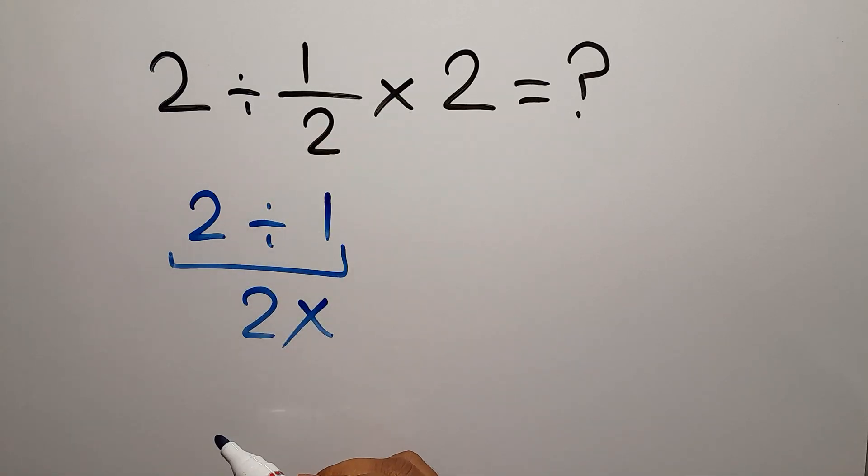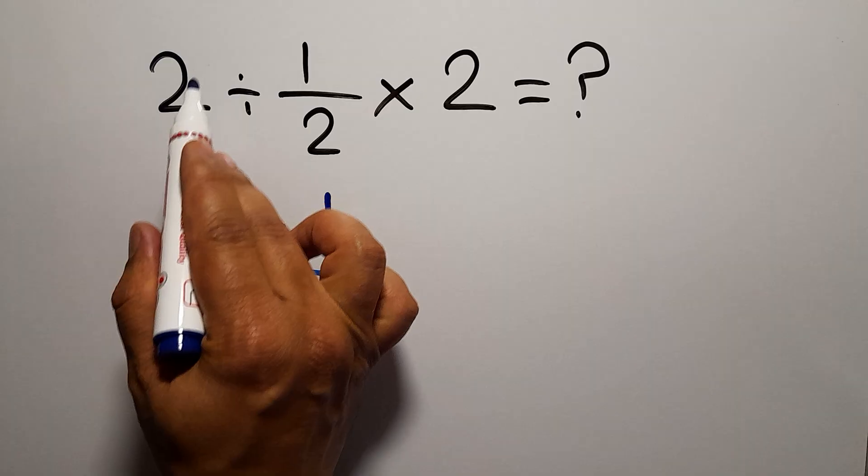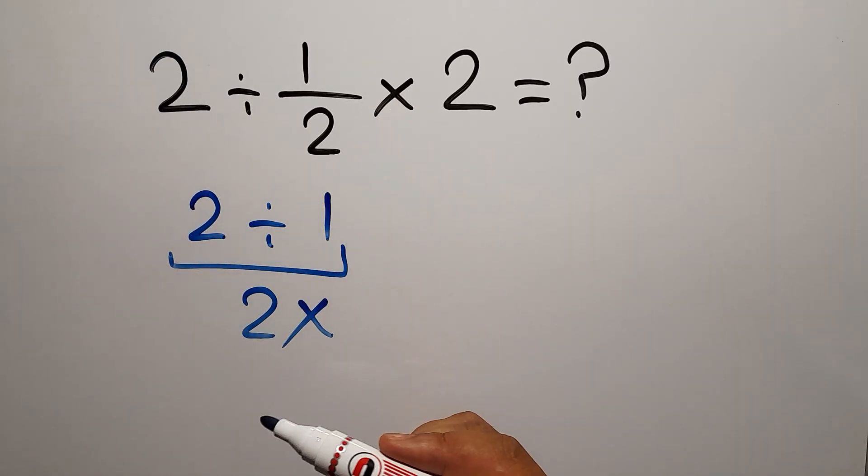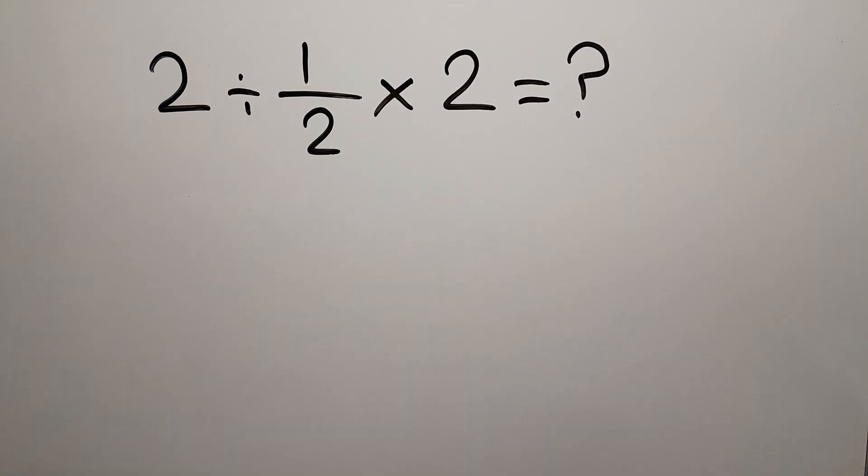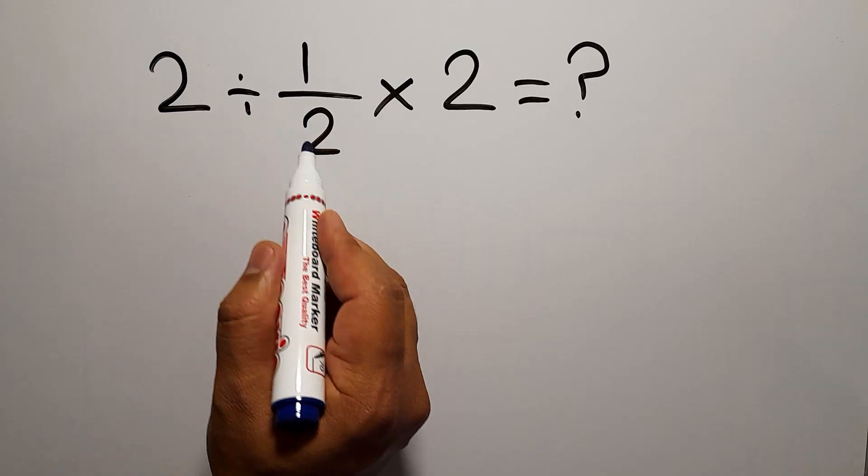We have to work from left to right. So first we have to do this division, not this multiplication. Okay, let's do it. First we have to do this division: 2 divided by 1/2.